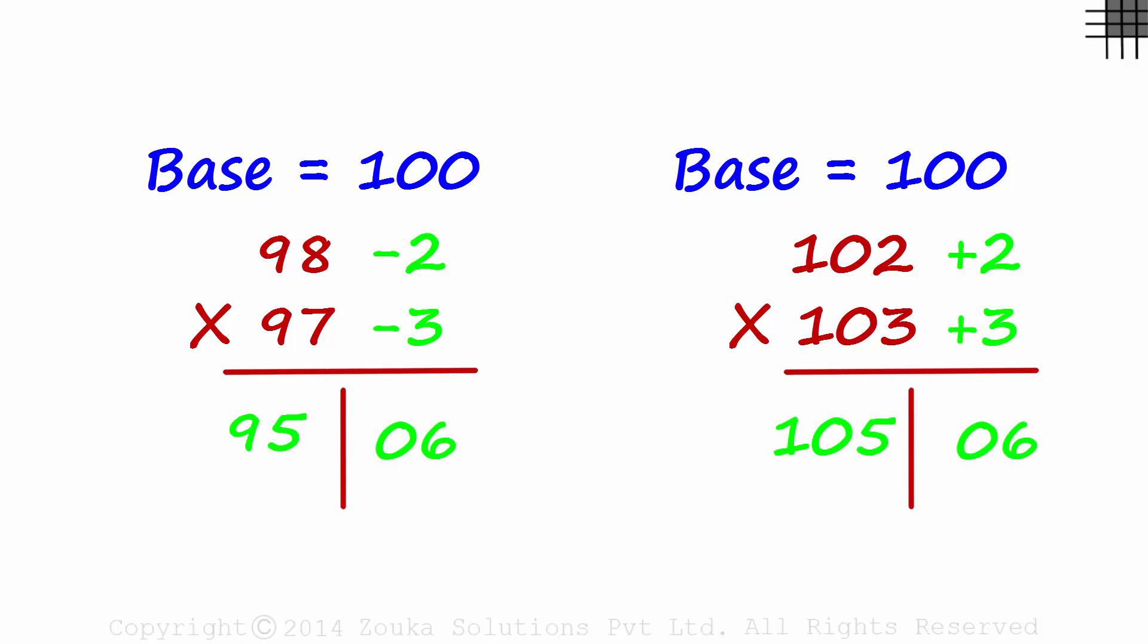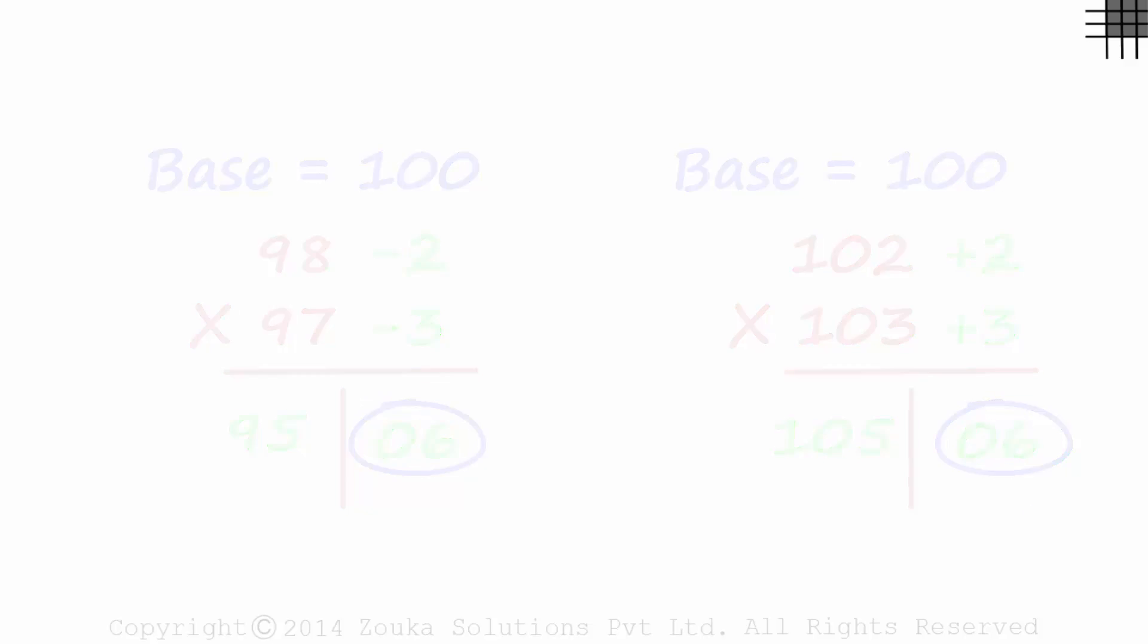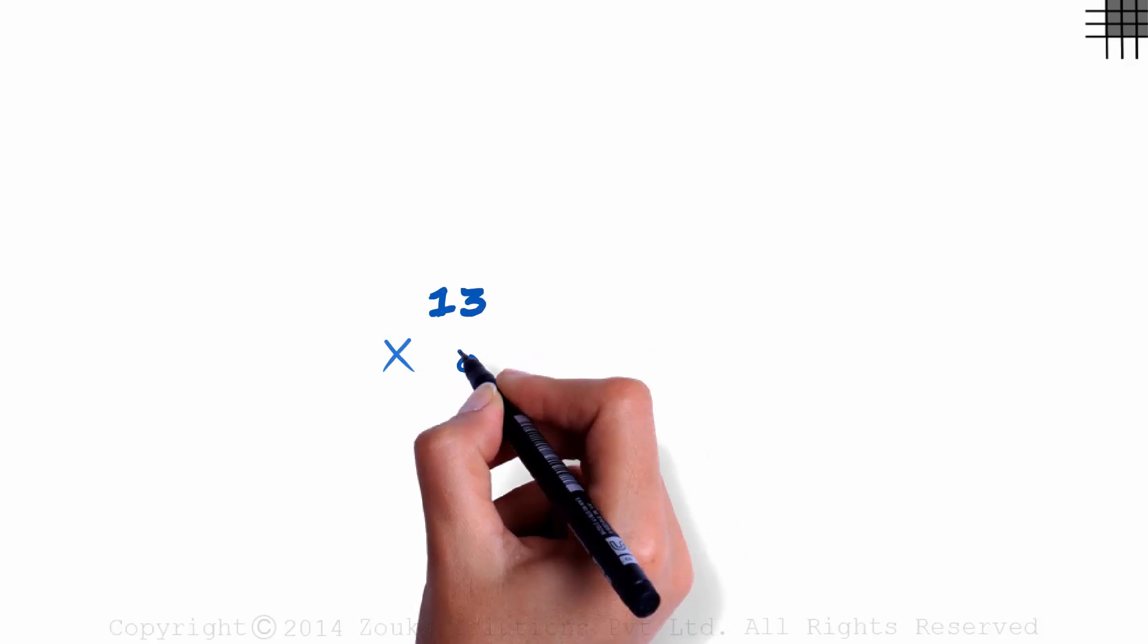In both cases, the product of the deviations was positive and we could write it on the right. But what if we have an example like 13 times 8?